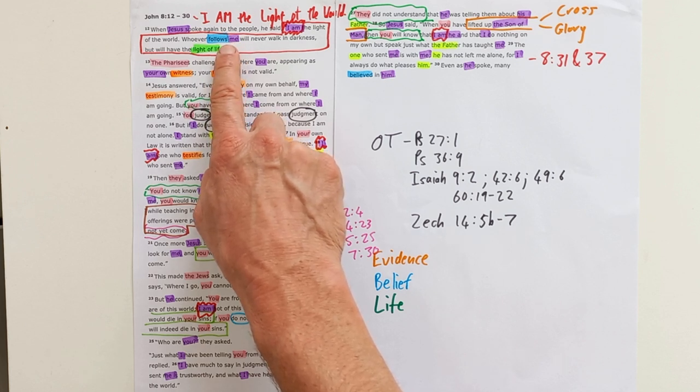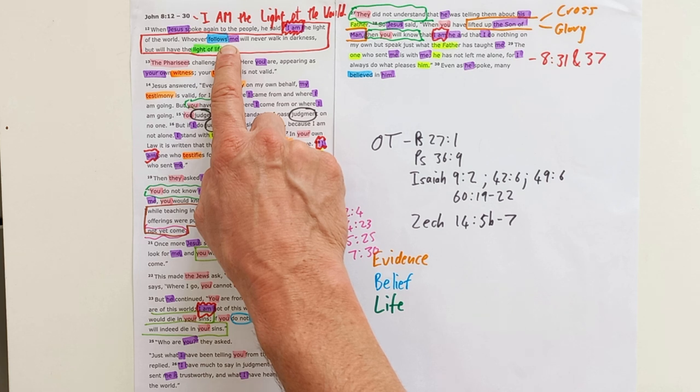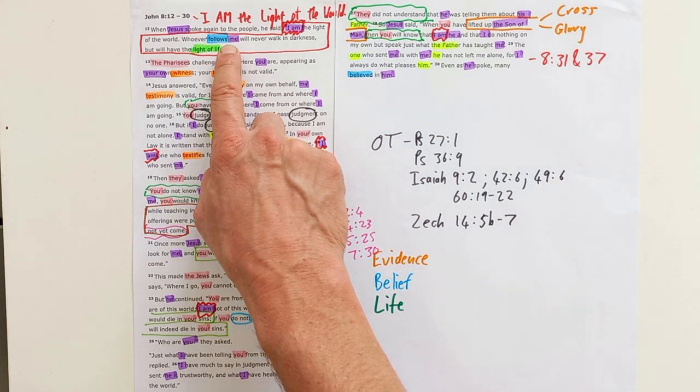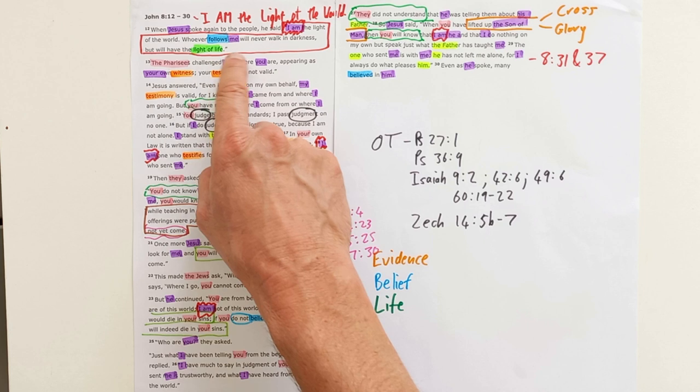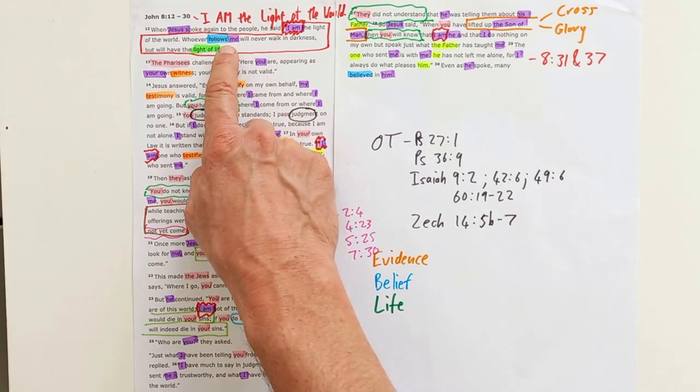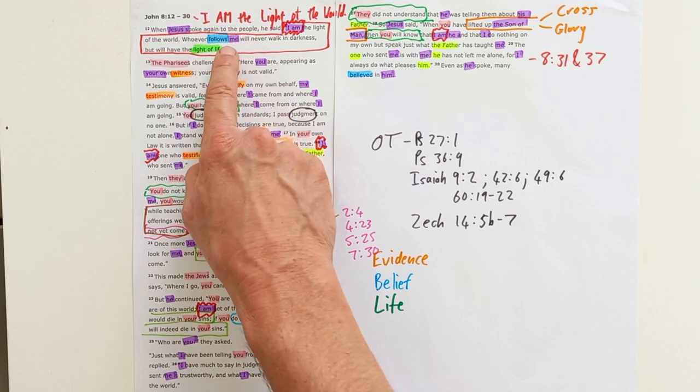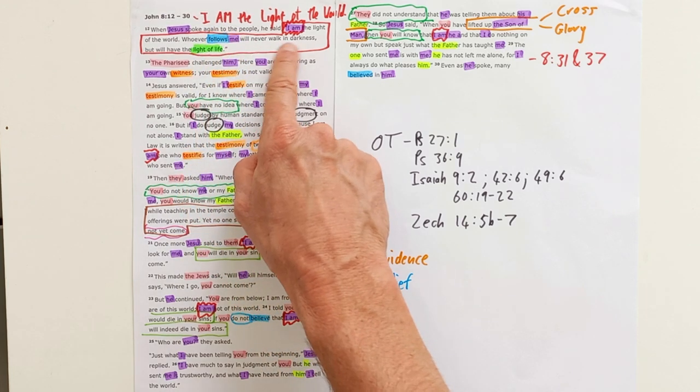The absolutely glorious truth: whoever follows me—that's the call of this passage, follow Jesus. We heard this in chapter 1 where Jesus said to Philip 'follow me,' and we'll hear it right at the end of John's gospel in chapter 21 when Jesus says in his final words to Peter 'follow me, keep following me.' The idea is that those who follow Jesus need to follow Jesus through this life until they get to glory with him.